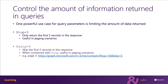When a result set spans multiple pages, Microsoft Graph returns an ODataNextLink property in the response that contains a URL to the next page of results. You can retrieve the next page of results by sending the URL value of the ODataNextLink property to Microsoft Graph. Microsoft Graph will continue to return a reference to the next page of data in the NextLink property with each response until all the pages of the result have been read.